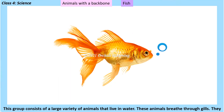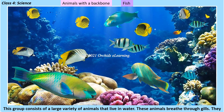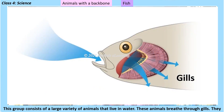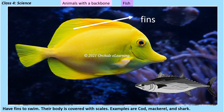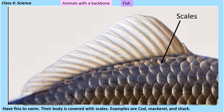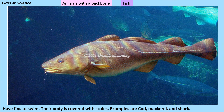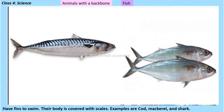Fish: this group consists of a large variety of animals that live in water. These animals breathe through gills, they have fins to swim, and their body is covered with scales. Examples are cod, mackerel, and shark.